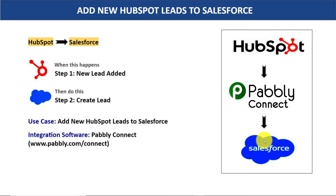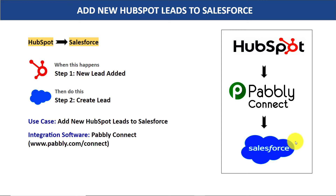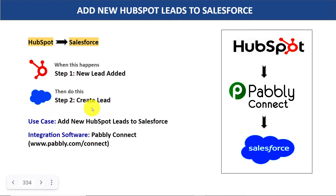So here you have two choices. The first choice is to copy all details of John from HubSpot, sort it out, and manually add this data in Salesforce to create a lead. The problem with this approach is it's actually very repetitive and tiresome. So I would suggest you bring in some automation so that whenever a new lead is added in HubSpot, it will automatically create a lead in Salesforce.